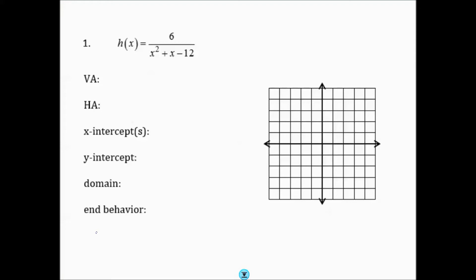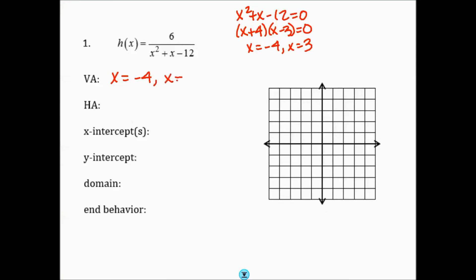For our first example, h of x equals 6 over x squared plus x minus 12. The first thing we need to do is find the vertical asymptote by setting the denominator equal to 0. Factoring x squared plus x minus 12 equals 0 gives us x plus 4 and x minus 3, so x equals negative 4 and positive 3. In this situation we actually have two vertical asymptotes.